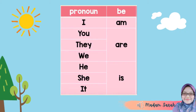The verb to be 'is' is used for singular — one person. Example: he, she, it, John, Sarah. 'Are' is used for plural — more than one. Example: you, they, we, Sarah and Amia. 'Am' is only used with the word I.